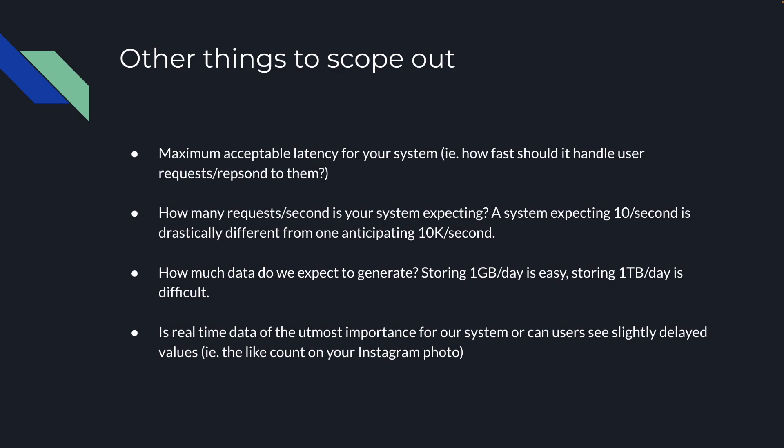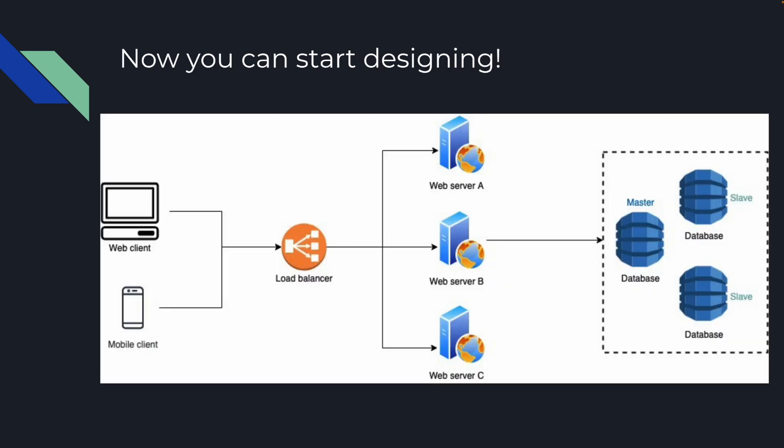Is real-time data of the utmost importance for our system, or can users see slightly delayed values? For example, on your Instagram photo, when you post it and you're getting a lot of likes, maybe that like count isn't the most up-to-date amount. Maybe it's lagging behind because it's not really a big deal if you see that you have 200 likes versus 195 — basically, you see that you have a lot of likes. Once you've posed these questions to your interviewer, you can now start designing.